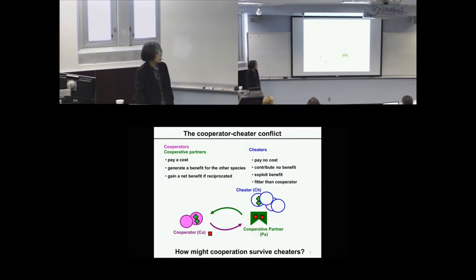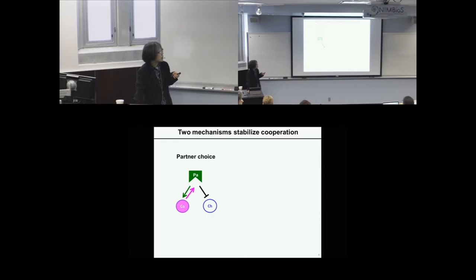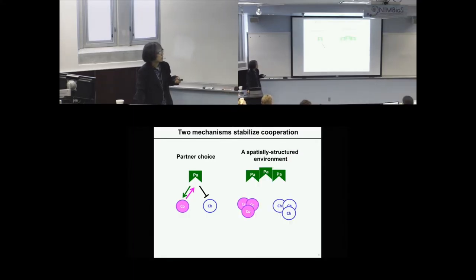This begs the question: how might cooperation survive cheaters? There are two known mechanisms that stabilize cooperation. If a partner can recognize a cooperator, specifically interact with a cooperator, and/or punish cheaters, then cooperation can be stabilized. Alternatively, experiments have shown that a spatially structured environment can stabilize cooperation.